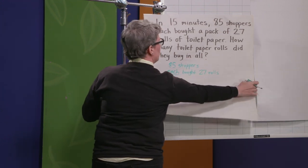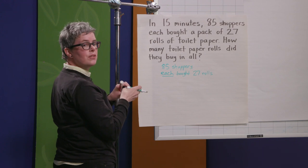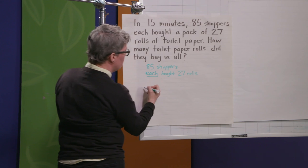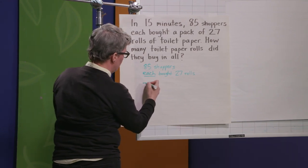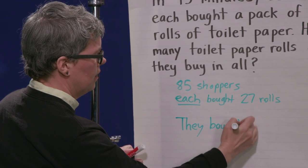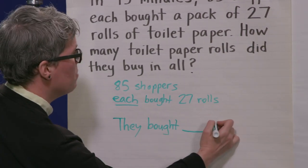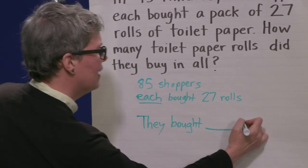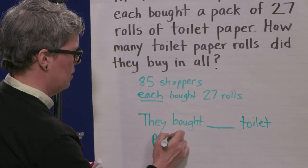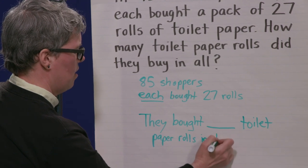So we remember that we're trying to figure out how many toilet paper rolls. So I'm going to write my open answer statement, and then I'll come back to it at the end. Okay? How many toilet paper rolls did they buy in all? They bought, and I'm going to write a line here that I'll fill in later. They bought blank toilet paper rolls in all. Okay?